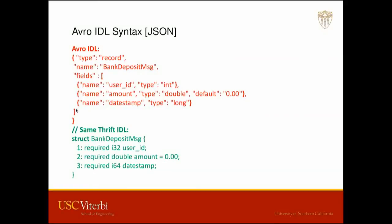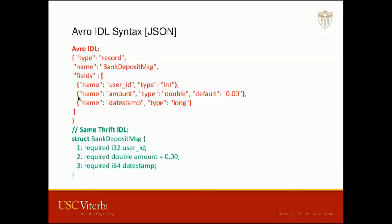Here we have a 'fields' array that defines one struct in your IDL — with fields for user ID, amount, and date stamp, representing a bank deposit message. This is the equivalent Thrift IDL alongside it. You can see it's a little more verbose with more syntax, but depending on your familiarity with JSON, you might feel more at home using that syntax.